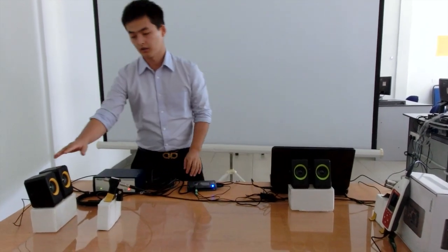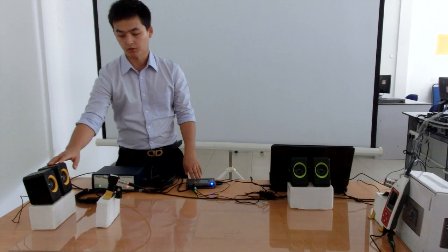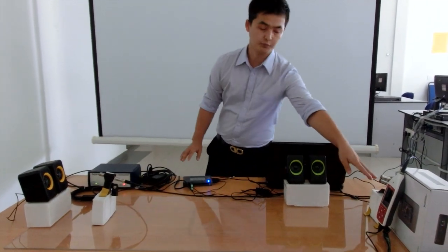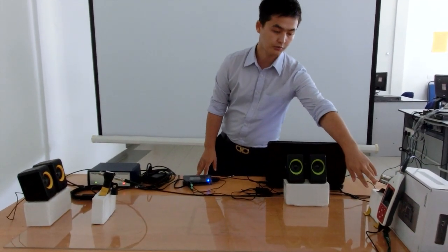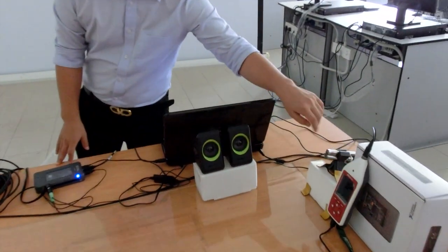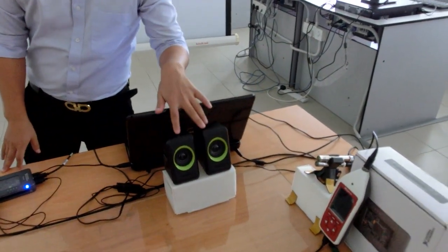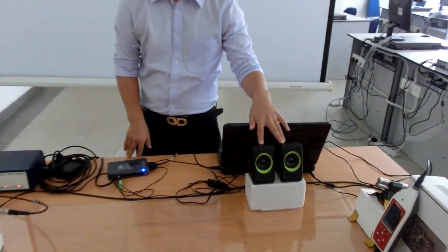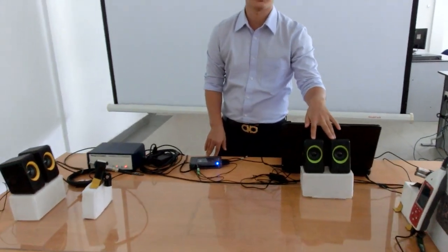Now I will show the setup. Assume this one is a source of our noise, and this is a place we want to cancel it. So we have a detector microphone at this place. This place we call a quiet zone. This one is a secondary loudspeaker that will generate an anti-noise.